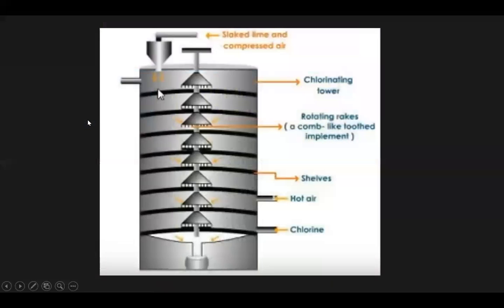You can see the diagram here. At the top you can see the hopper, where slaked lime and compressed air are introduced in powdered form downward. At the bottom there is an injector where chlorine gas along with hot air is introduced; chlorine gas rises upward while slaked lime moves downward. This is the chlorinating tower, and these are the rotating racks that mix the two reacting species.